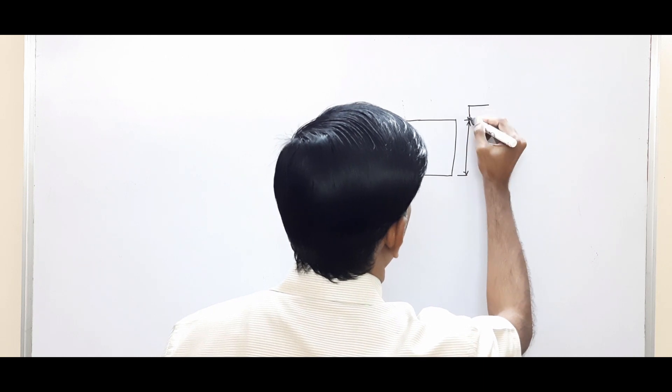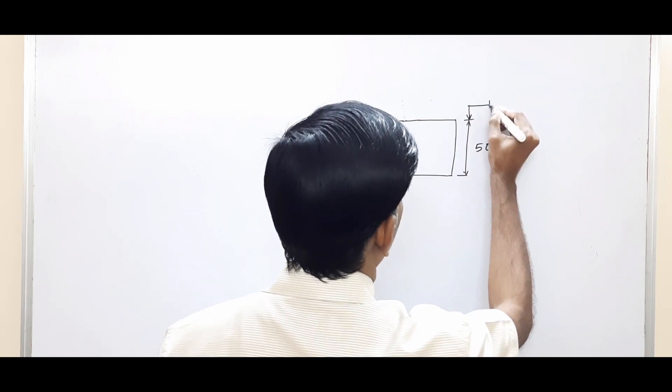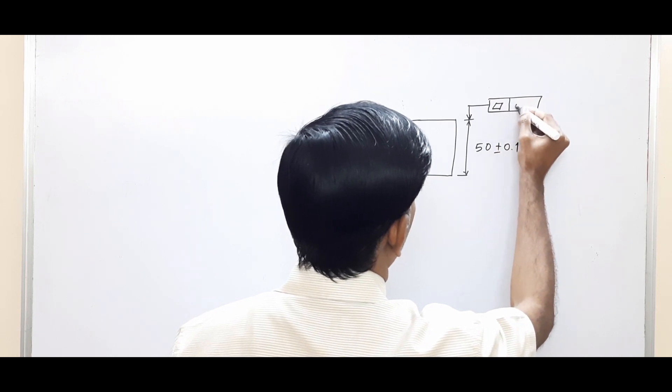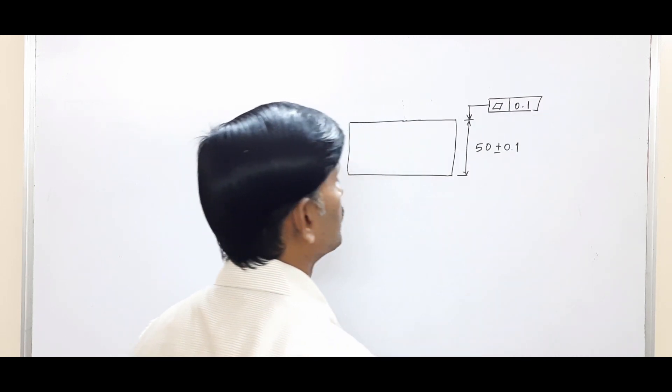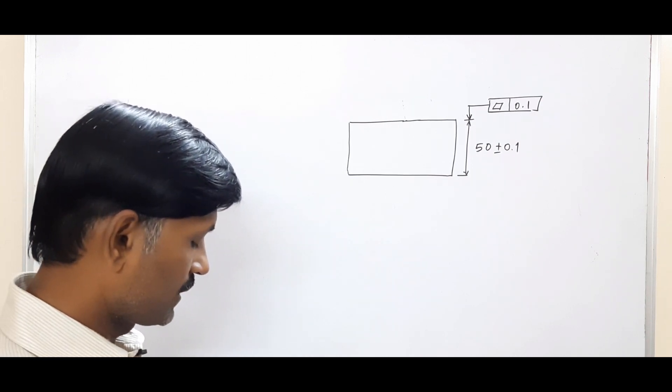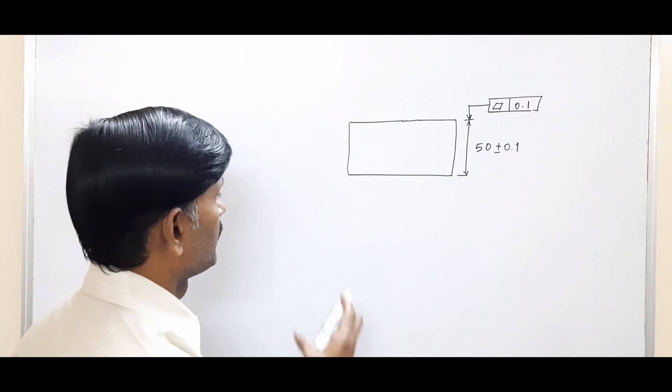So the leader line of the feature control frame should be exactly in line with the dimensions. Put the flatness symbol. Okay, here what does that mean is after manufacturing we may end up with a part having a shape like this.